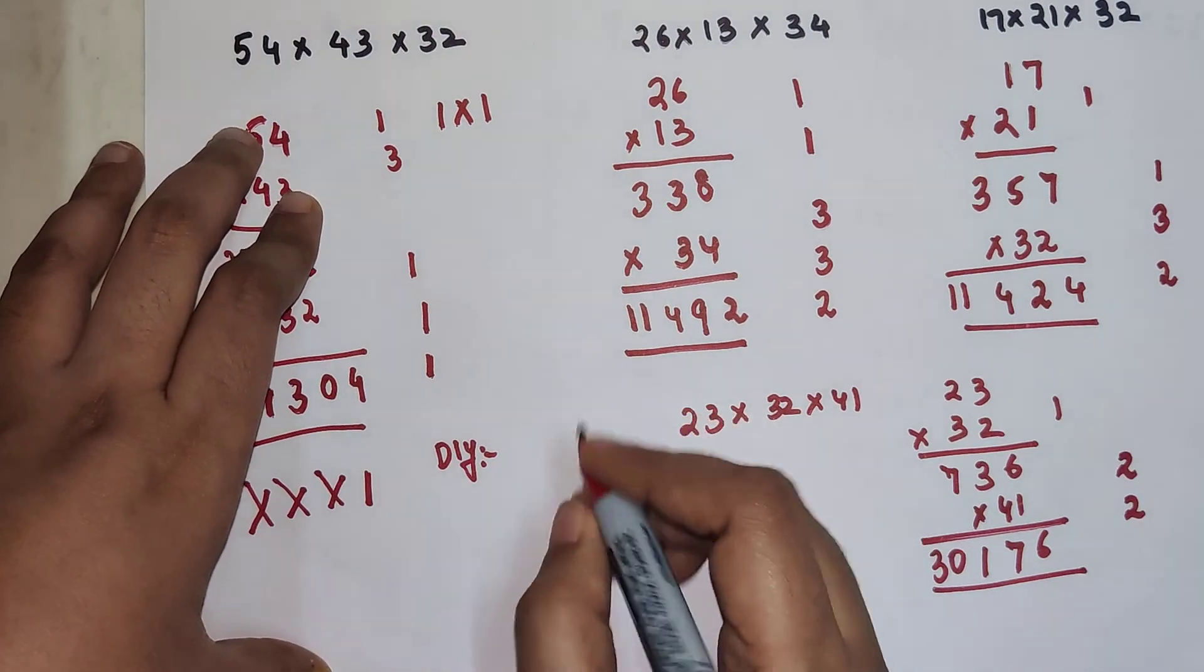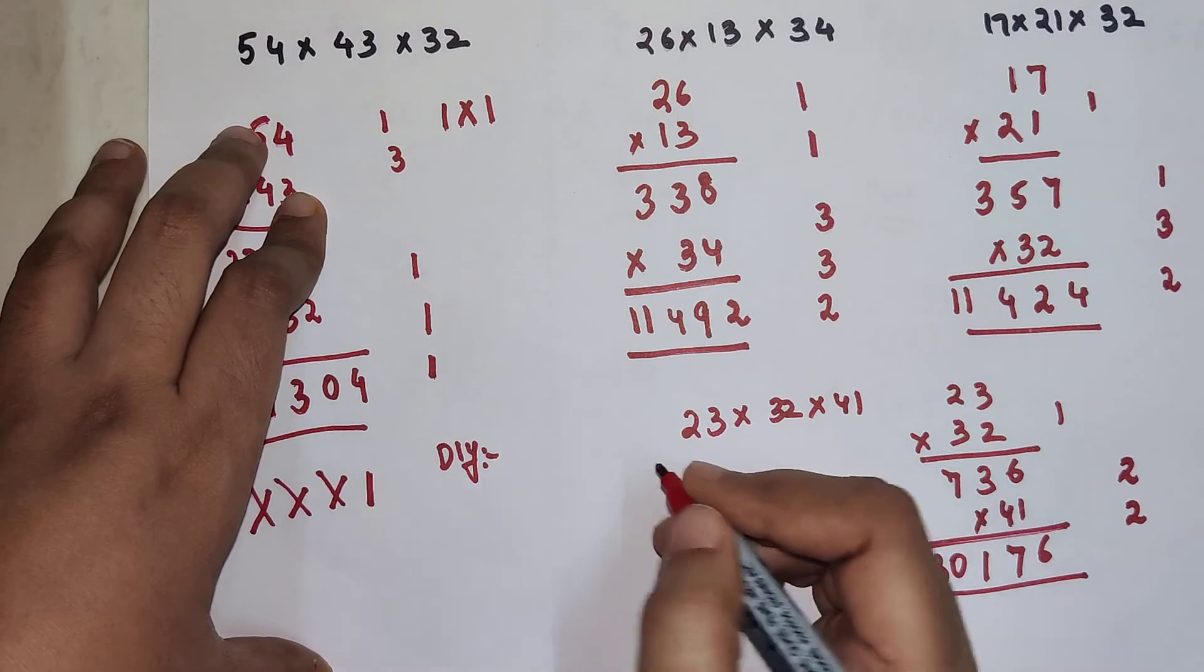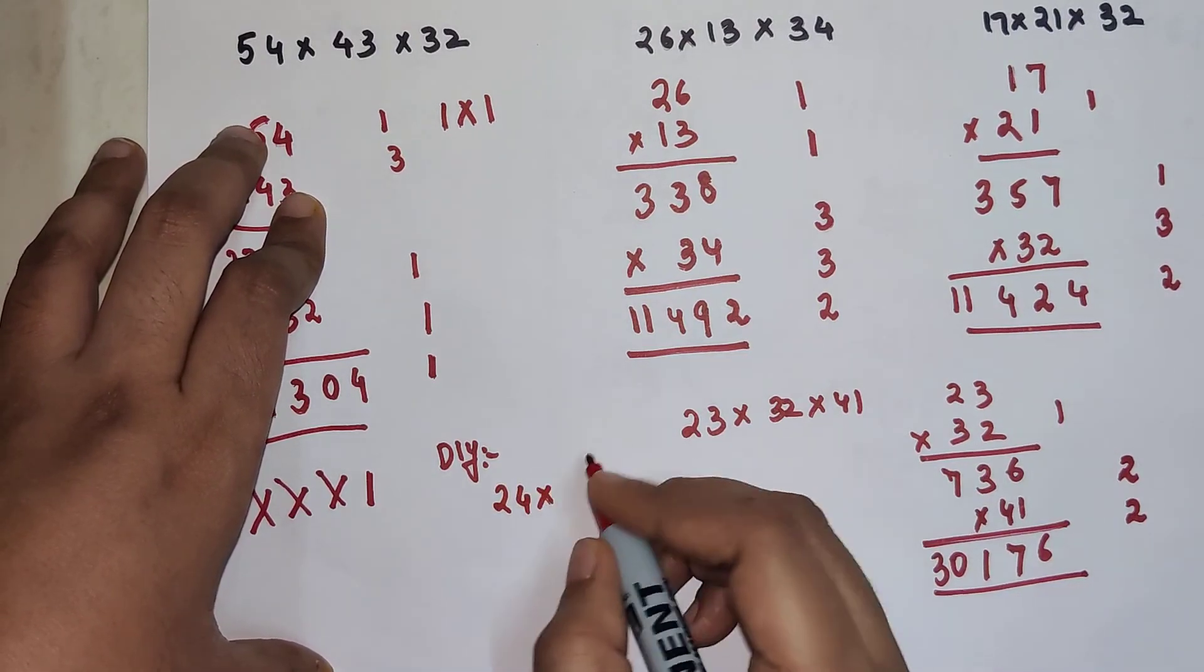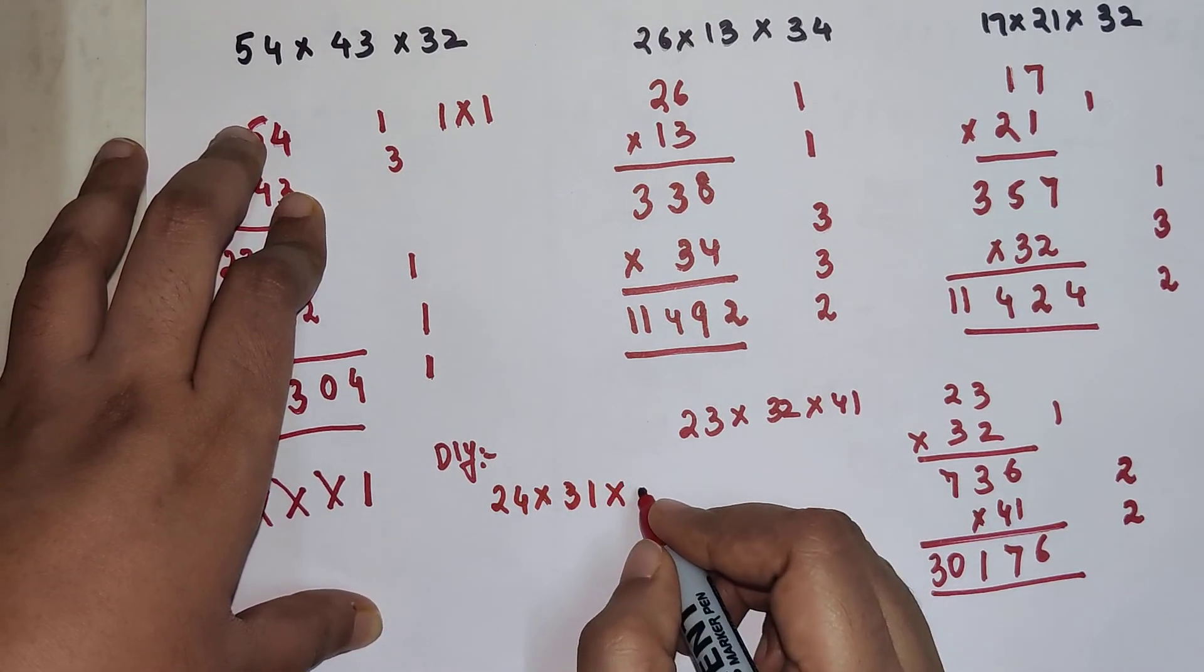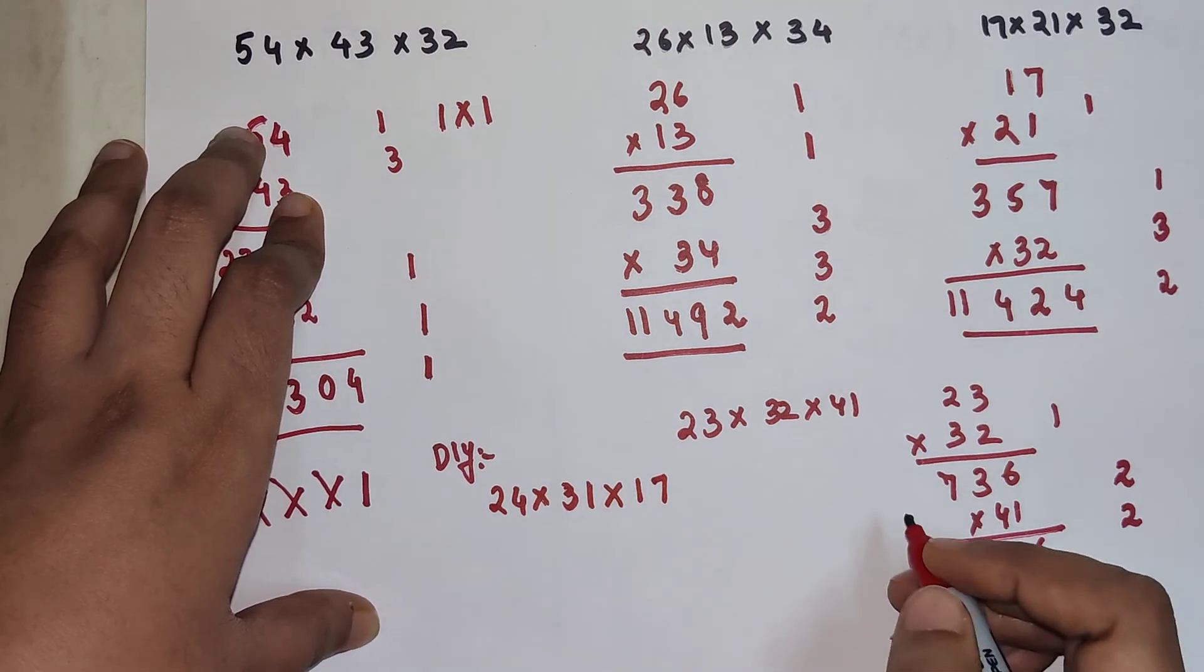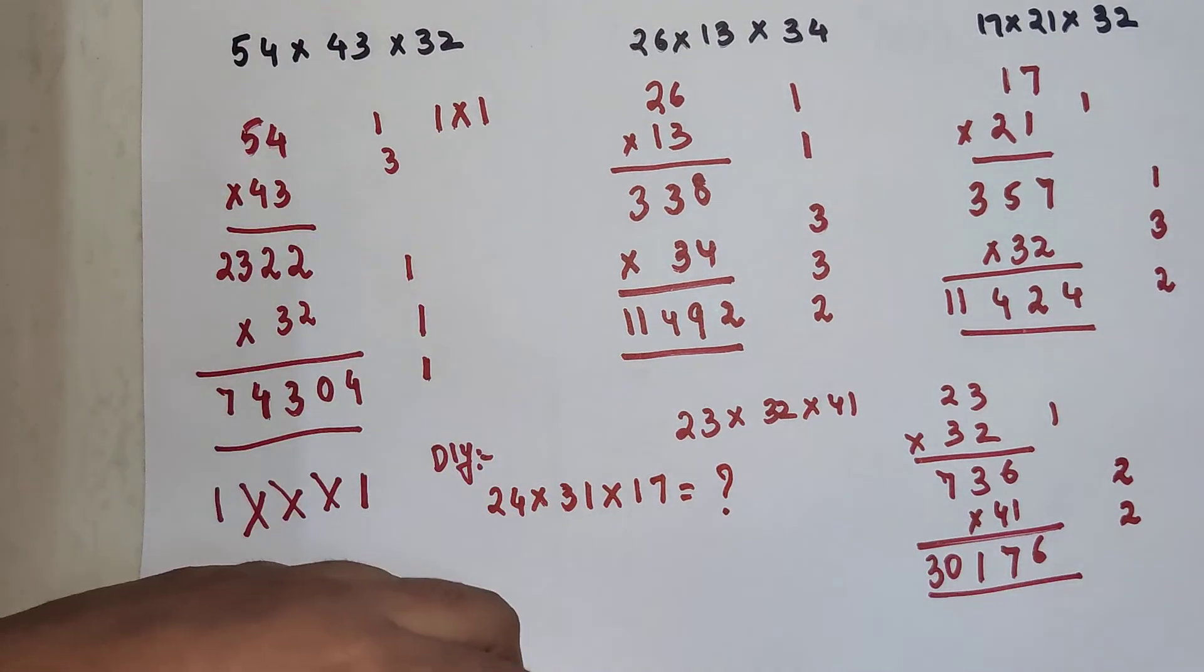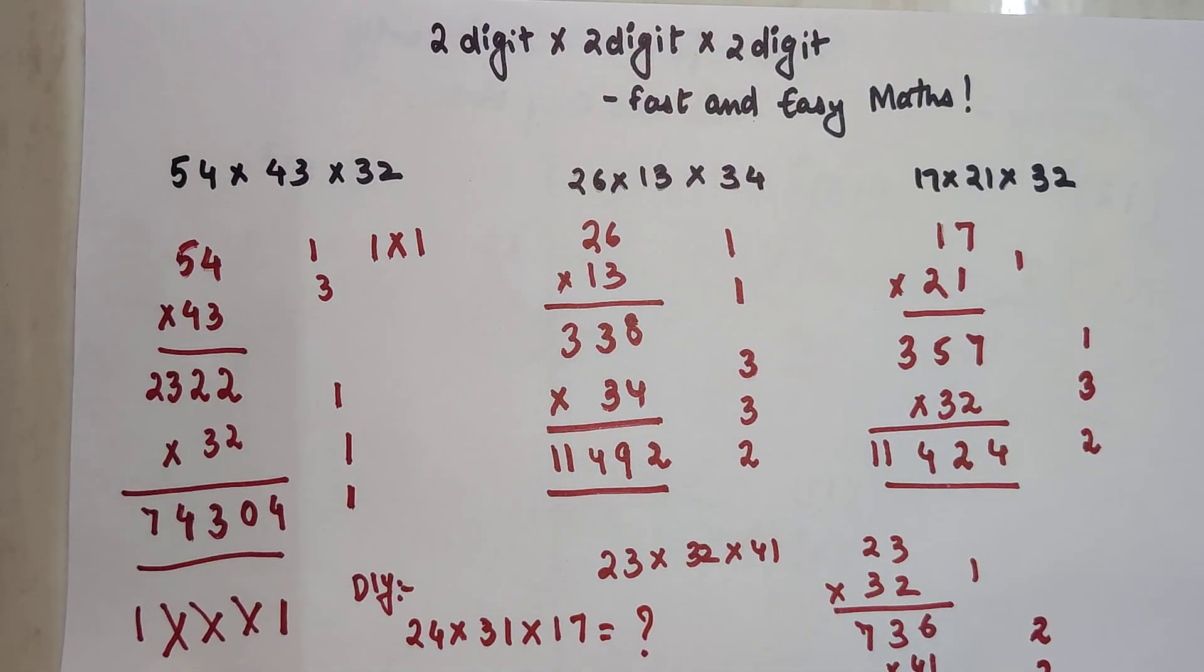Now students I want you all to tell me what is the multiplication of 24 into 31 into 970. Do let me know your answers in the comment section. So that's it for today. I will see you in the next video. Bye.